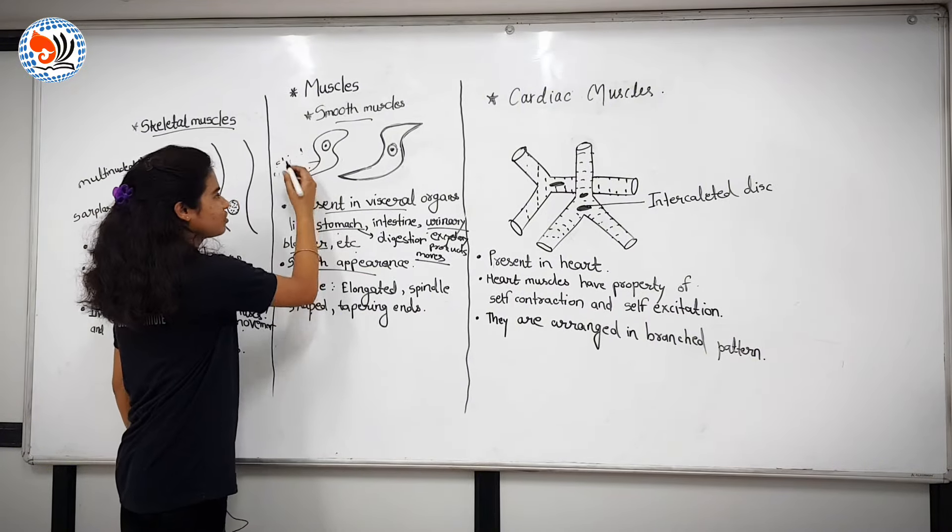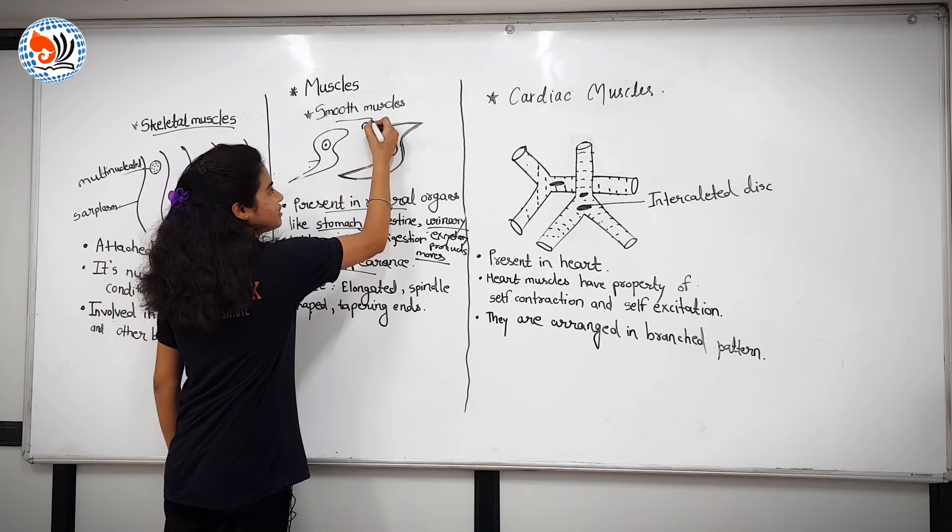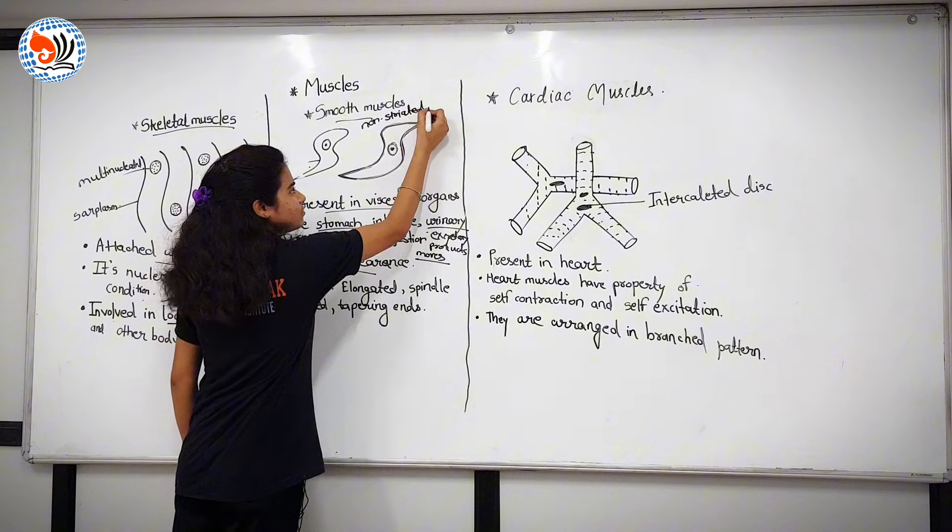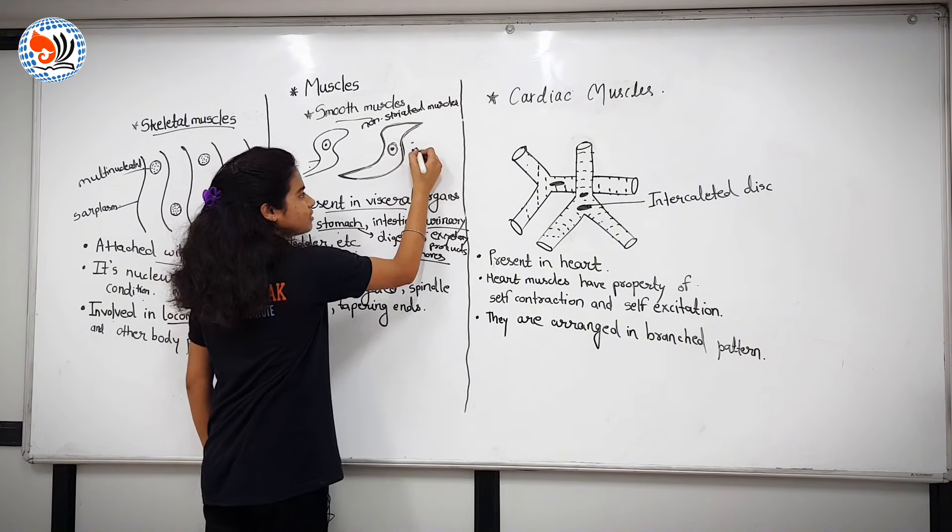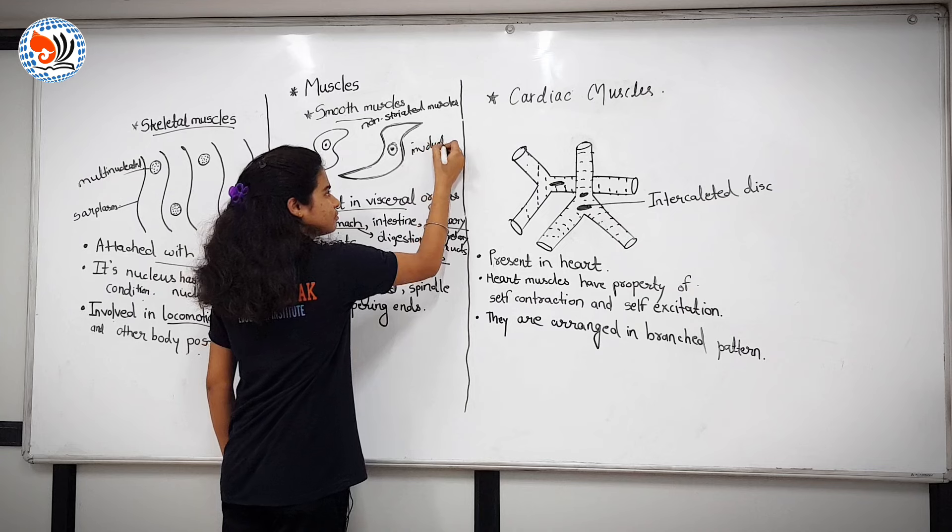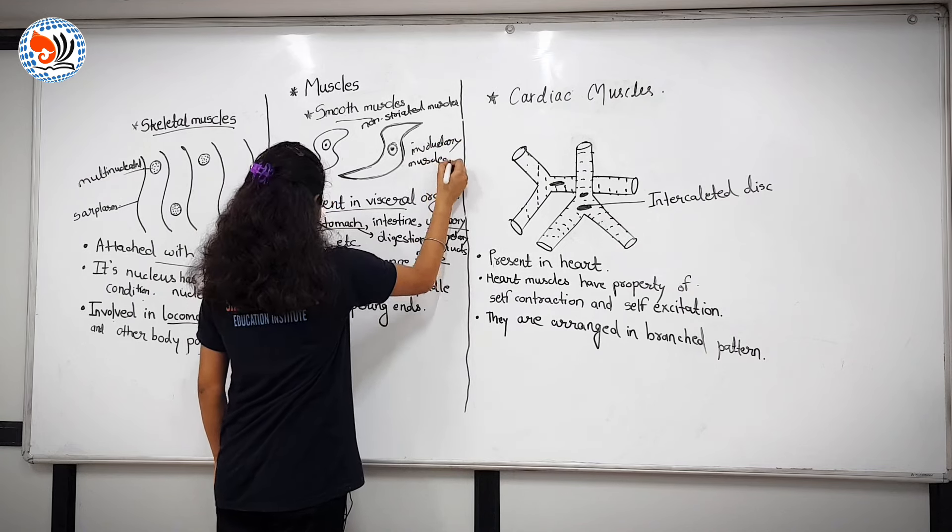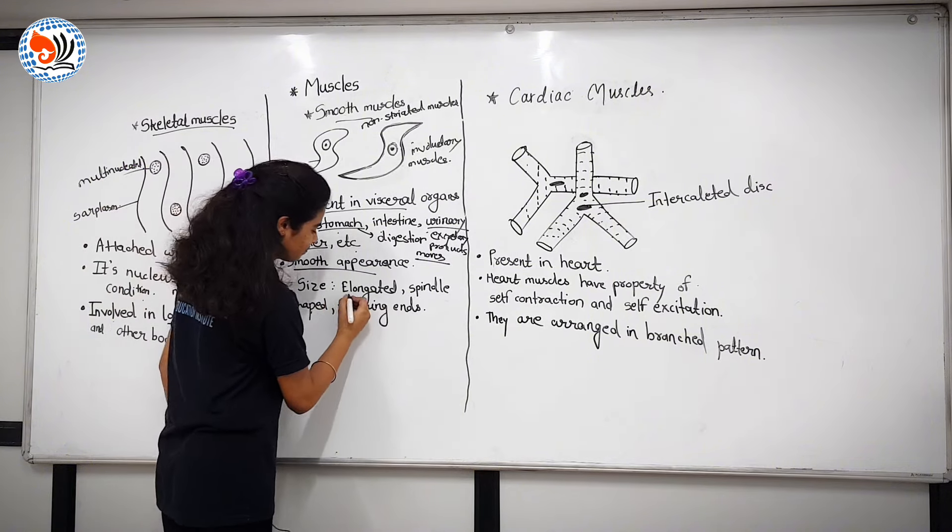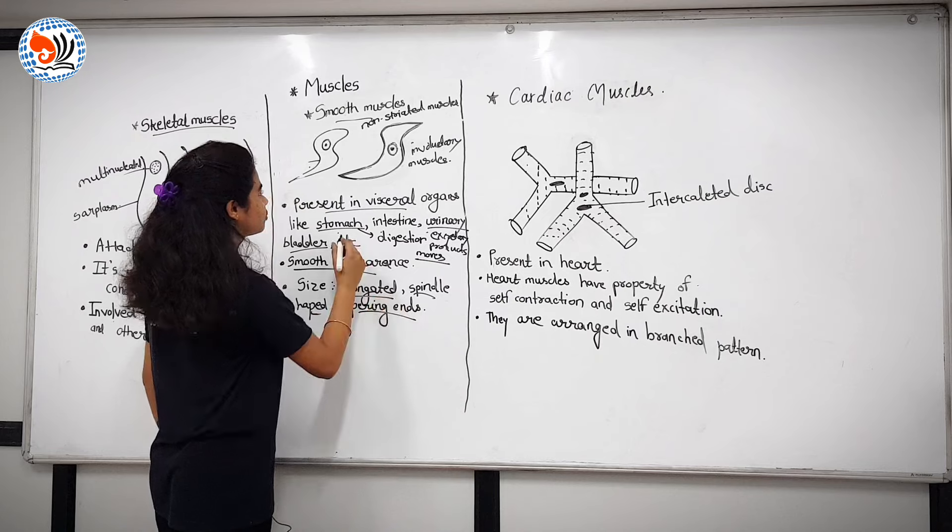Smooth muscles are also known as non-striated muscles and they are involuntary muscles. Smooth muscles in size, they are elongated, spindle shaped and have tapering ends.